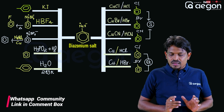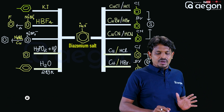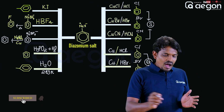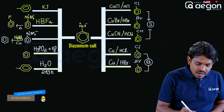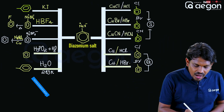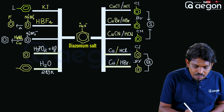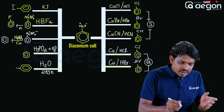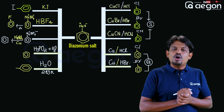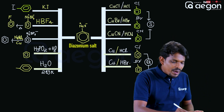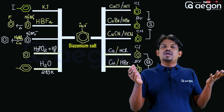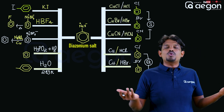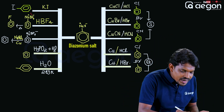This preparation is also a named reaction — the Gattermann reaction. Treating diazonium salt with KI (potassium iodide) gives iodobenzene. For fluorobenzene, treat with HBF4 fluoroboric acid; benzene diazonium fluoroborate gives fluorobenzene — this is the Balz-Schiemann reaction.